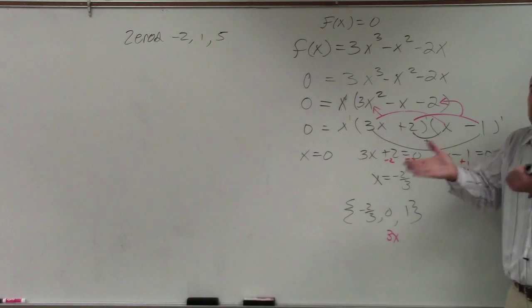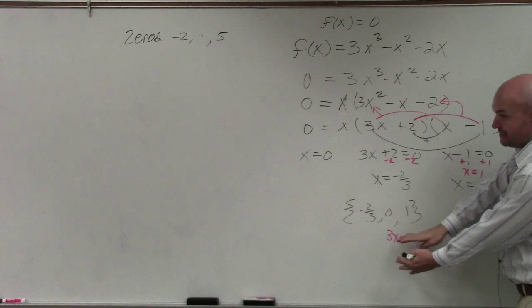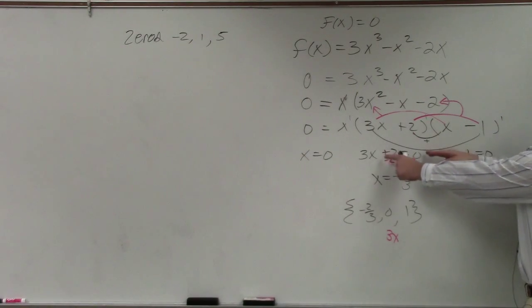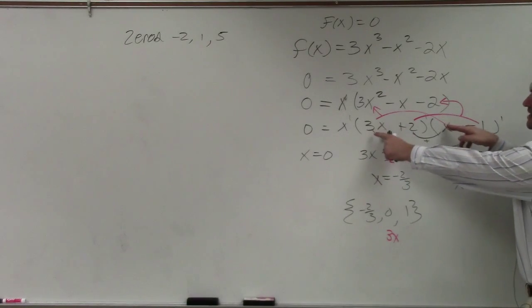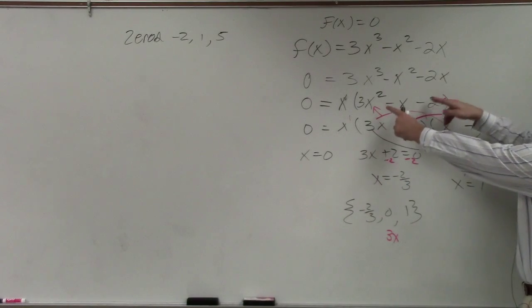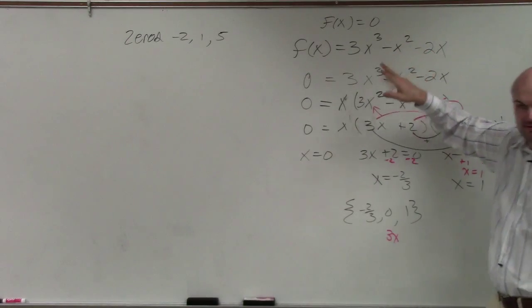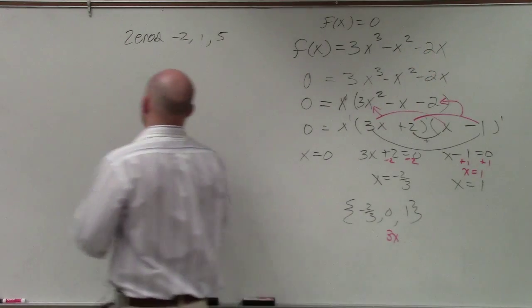So literally all we're going to be doing is going here, setting them equal to 0, or setting them equal to x, setting them equal to 0, writing them as factors equal to 0, multiplying them, and then replacing it with f of x. It's all backwards.